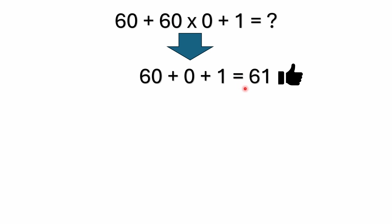I see a lot of people answer with 1, or sometimes I've even seen some odd ones like 121. Anyone getting 121 is really just forgetting what 60 times zero is. Anything times zero is zero. But the only thing multiplied by zero here is 60.